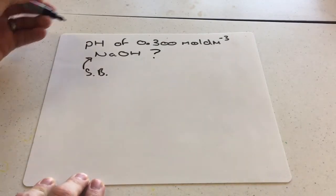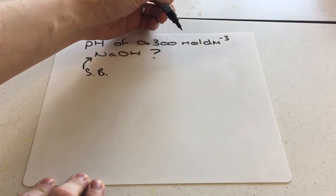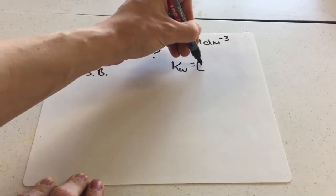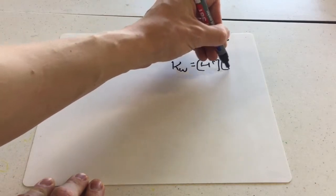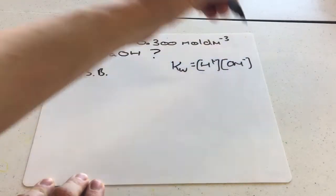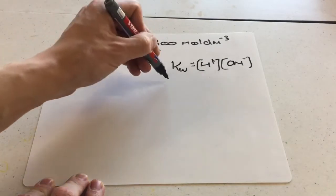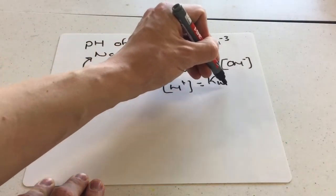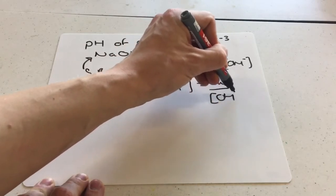Now normally if you wanted to figure out the pH of this strong base, you'd need to use the Kw expression. So you'd need to know that Kw equals H plus ion concentration times the OH minus ion concentration. You'd rearrange it to make H plus ions the subject, and so that would be Kw divided by OH minus.